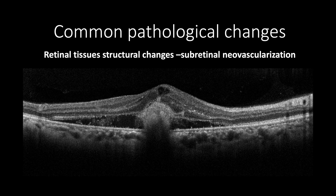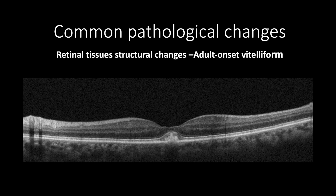This OCT cross-section of subretinal choroidal neovascularization shows an amorphous mass with subretinal blood and fluids with disrupted ellipsoid zone, along with increased retinal thickness and cystic formation. However, the amorphous subretinal mass shouldn't be mistaken with subretinal vitelliform accumulation, which appears as a more homogeneous mass between the RPE and intact ellipsoid zone.